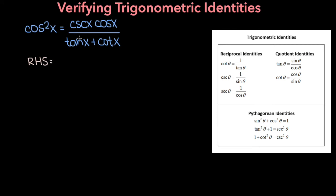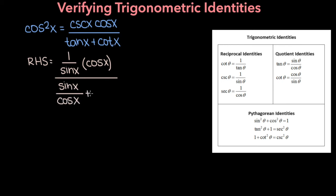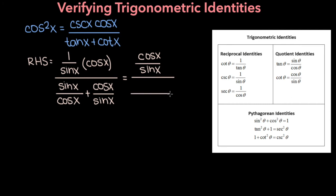Let's start simplifying the right-hand side of this expression by converting everything to a sine or a cosine. Cosecant x is 1 over sine x, so in the numerator we have 1 over sine x times cosine x, and in the denominator we have tangent x which is sine x over cosine x plus cotangent x which is cosine x over sine x. So the numerator is cosine x over sine x, and for the denominator let's find the common denominator of those two fractions, which will be cosine x times sine x, and in the numerator we'll have sine squared x plus cosine squared x.